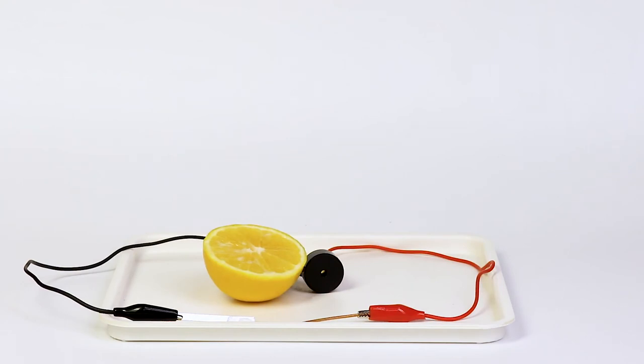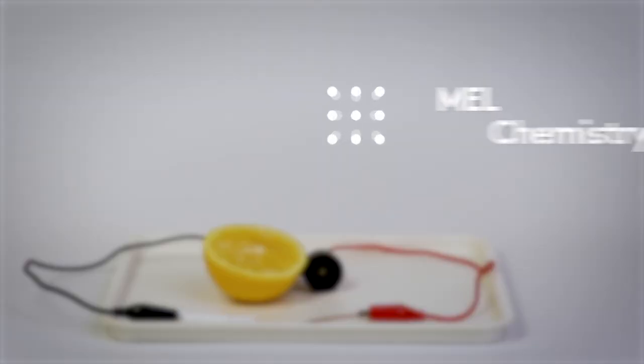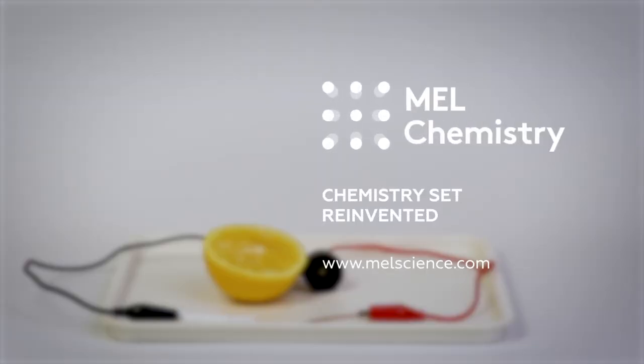Simultaneously, on the surface of copper, protons from lemon juice will be reduced to produce hydrogen. Here, lemon juice acts as an electrolyte and keeps the electrical circuit in a closed loop. Learn more about this experiment on our Mel Science website.